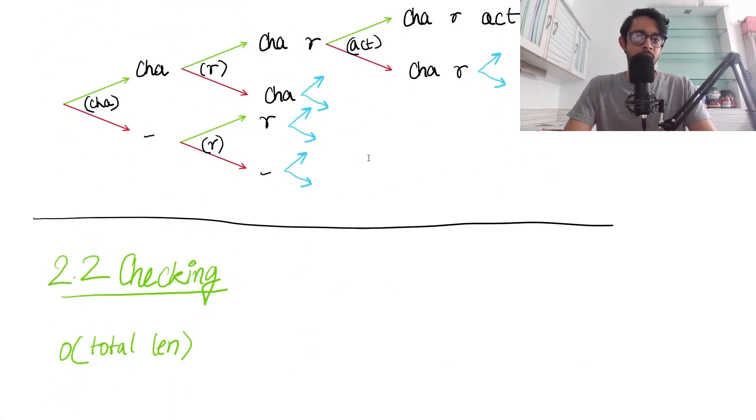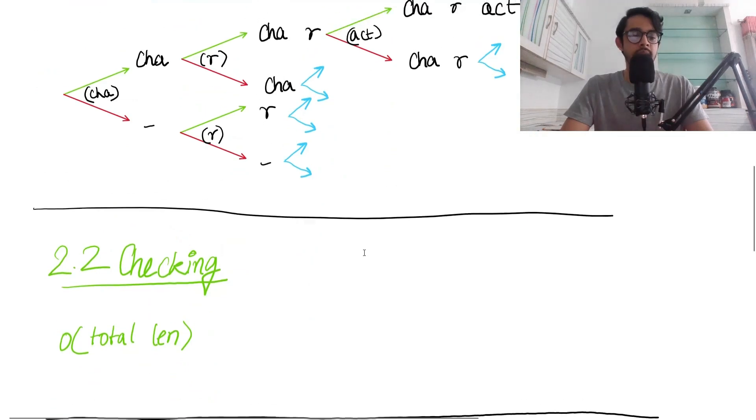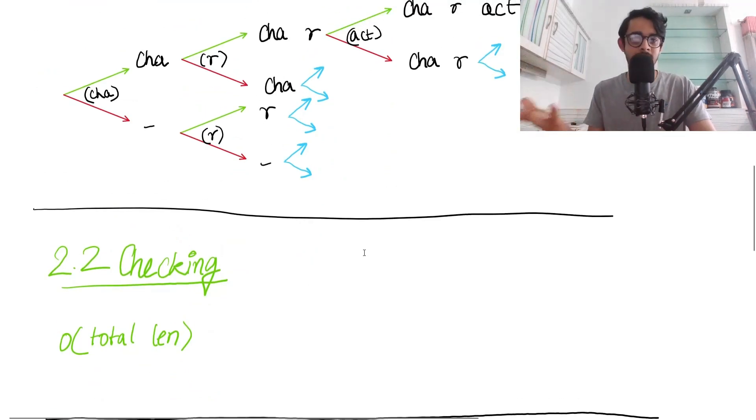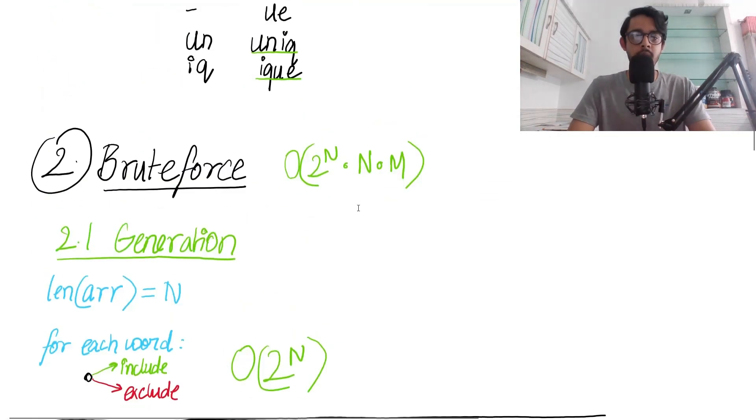We've enumerated all subsequences but still need to check if it follows the unique characters condition. We can do that check in O(N*M) where M represents maximum length of one word, so NM is total complexity for checking, 2^N for generation. This is our final answer.